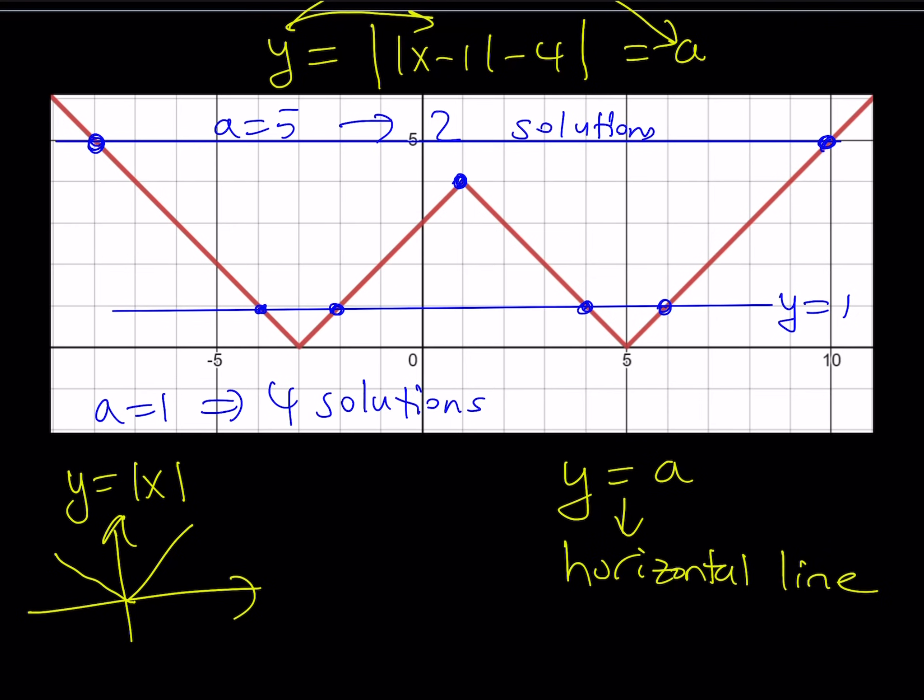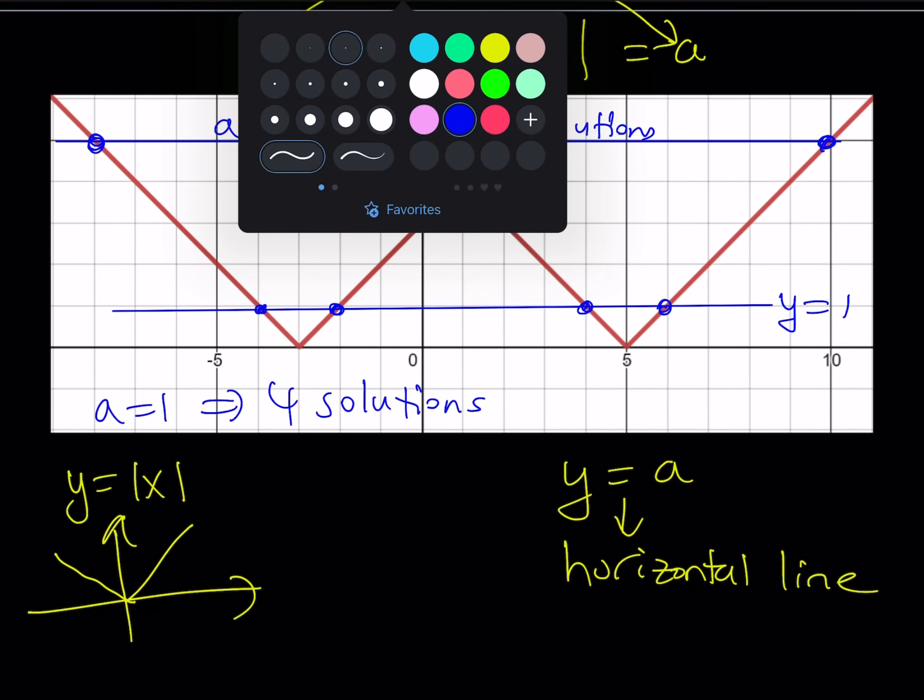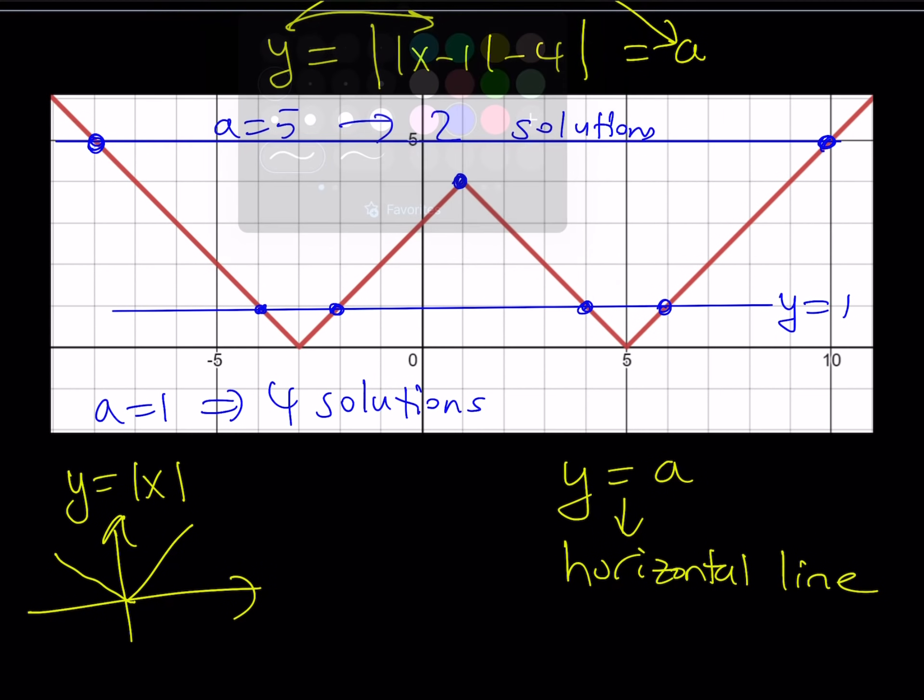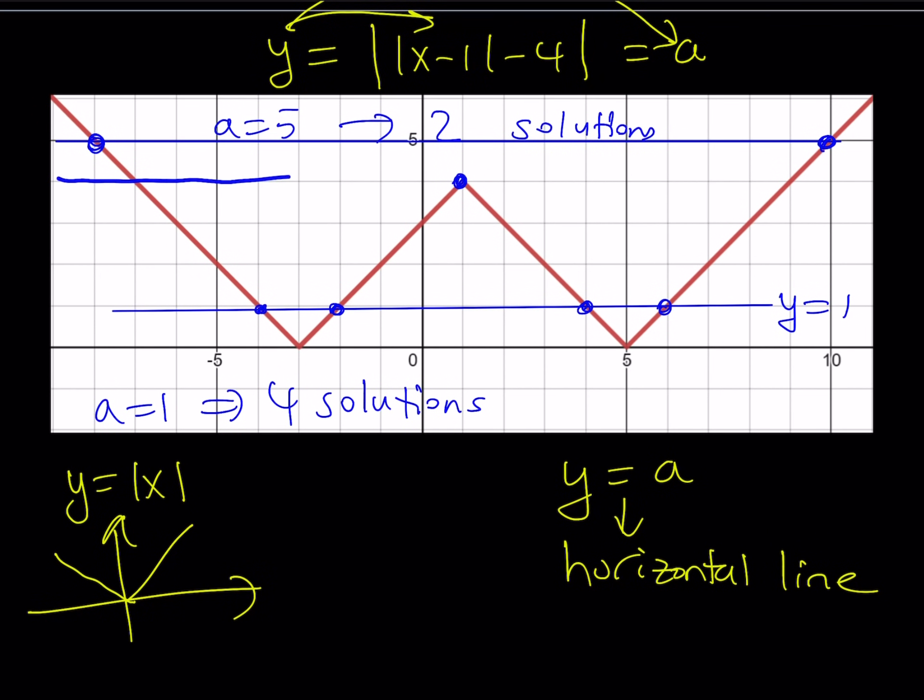So here we go. This is our special line that works and here we go. So this shows us that the line y equals four is going to have three intersection points with the absolute value function. Therefore, we will have three solutions to this equation. a equals four.